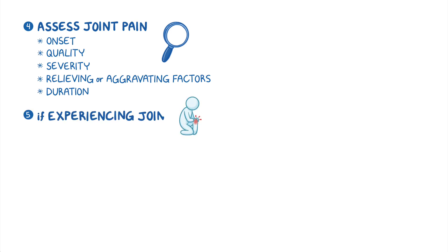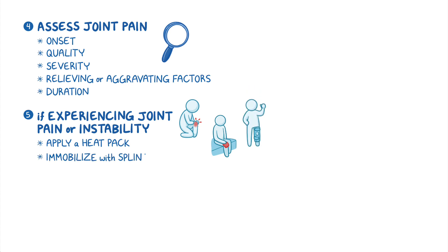Next, assess joint pain by asking about the onset, quality, severity, relieving or aggravating factors, and duration of pain. If your client is experiencing joint pain or instability, apply a heat pack to the affected area, or assist them to immobilize the joint with a splint or brace until inflammation subsides.